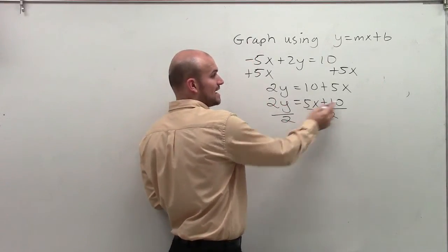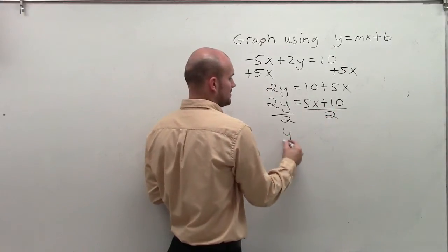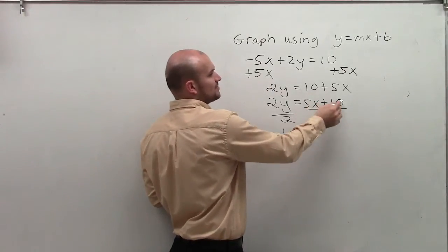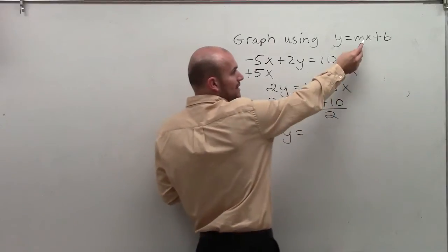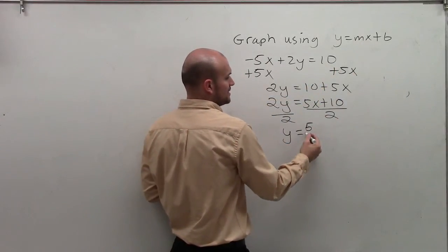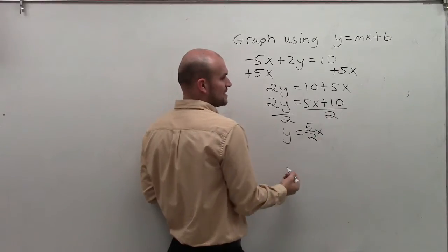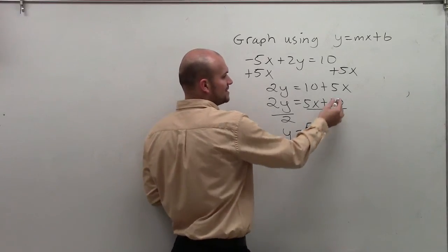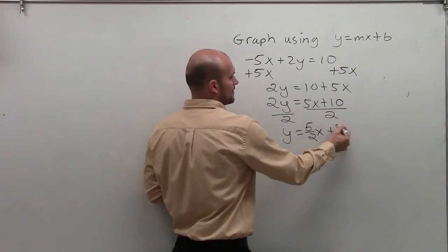Now remember, I'm dividing by 2 for both of these terms. So rather than writing 5x plus 10 divided by 2, I want it to look like this. So I'm going to say 5x divided by 2, which would be 5 halves times x, and 10 divided by 2, which is 5.